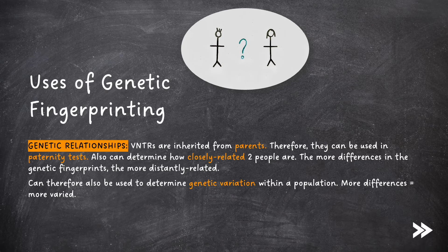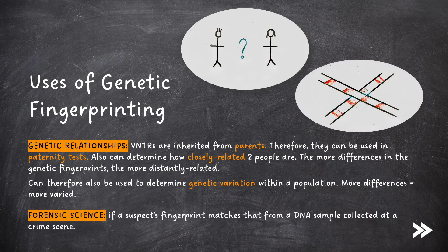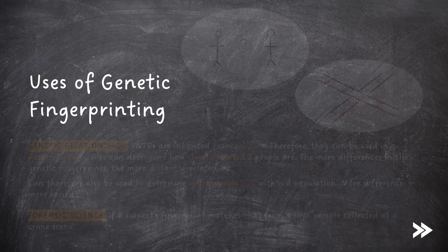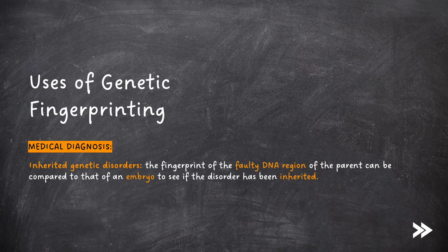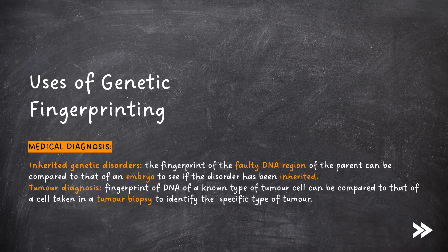Genetic fingerprints can also be used in forensic science. If the suspect's fingerprint matches that from a DNA sample collected at a crime scene, this can be used to prove that the suspect was present at the crime scene. Genetic fingerprinting can also be used in medical diagnosis. For example, they can be used to diagnose inherited genetic disorders. The fingerprint of the faulty DNA region of the parent can be compared to the same region in an embryonic stem cell to see if the condition has been inherited. They can also be used to diagnose a type of tumour — the fingerprint of the DNA of a known type of tumour cell can be compared to that of a cell taken in a tumour biopsy to identify the specific type of tumour.